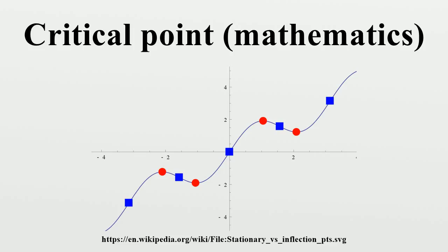In this case, critical points are also called bifurcation points. In particular, if C is a plane curve defined by an implicit equation f equals zero, the critical points of the projection onto the x-axis parallel to the y-axis are the points where the tangent to C is parallel to the y-axis. In other words, the critical points are those where the implicit function theorem does not apply.